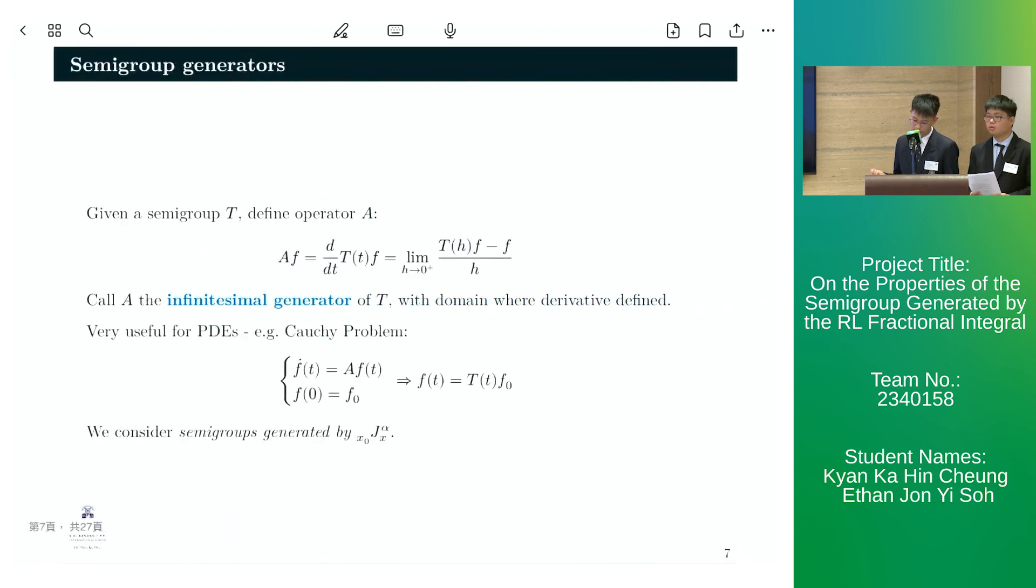Now, given a semigroup T, we can define an operator A by the following. And we call A the infinitesimal generator of T. As mentioned before in our paper, we consider the semigroups generated by j-alpha.